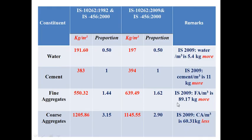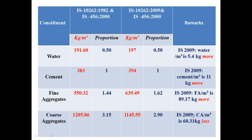Comparing the two methods in a table (IS 10262:1982 + IS 456:2000 vs IS 10262:2009 + IS 456:2000): in the 2009 code, water per m³ is 5.4 kg more; cement per m³ is 11 kg more; fine aggregate per m³ is 89.17 kg more; and coarse aggregate per m³ is 60.31 kg less.